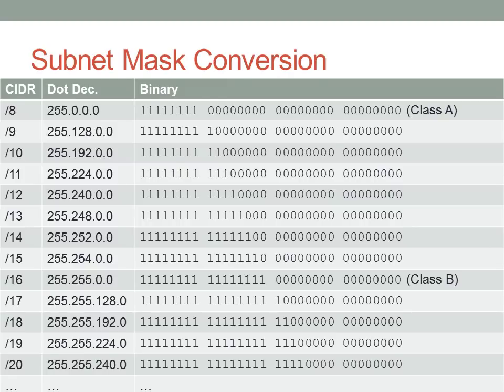Here are some conversion examples. A slash 8 would be a class A address, written in dotted decimal as 255.0.0.0. As you add more ones and borrow more bits for the network portion, you get these specific values: 128, 192, 224, 240, 248, 252, 254, and finally 255. This pattern repeats from one octet to the next as you add more bits to the subnet mask. I encourage you to memorize this pattern of recurring numbers between 128 and 255, as you'll find it very handy when working with network masks that are not as straightforward. For example, if you have a subnet mask 255.248.0.0, you'll need to know that's 13-bit — and you'll have to do the math yourself.